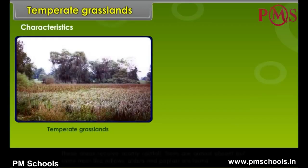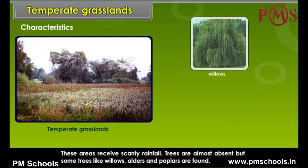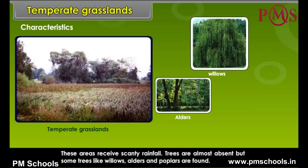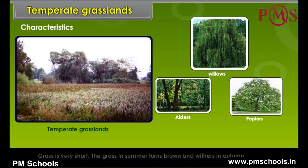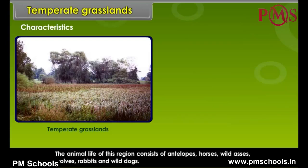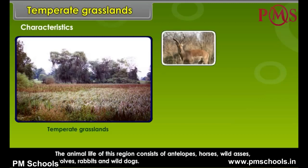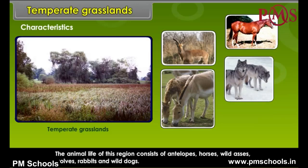Characteristics: These areas receive scanty rainfall. Trees are almost absent but some trees like willows, alders and poplars are found. Grass is very short. The grass in summer turns brown and withers in autumn. Cattle is reared in these grasslands. The animal life of this region consists of antelopes, horses, wild asses, wolves, rabbits and wild dogs.